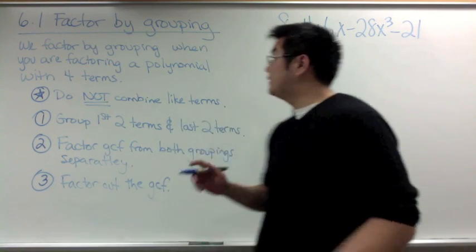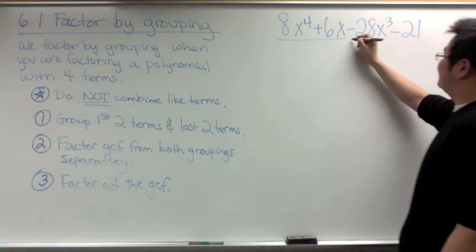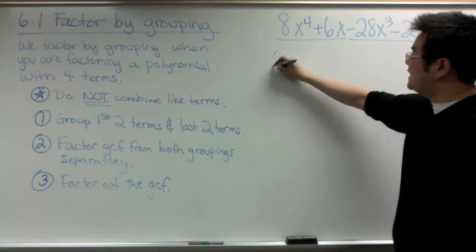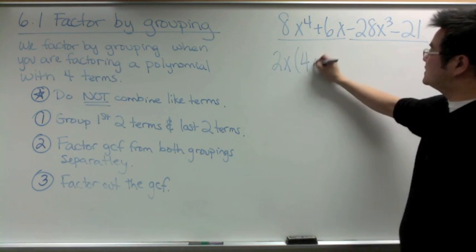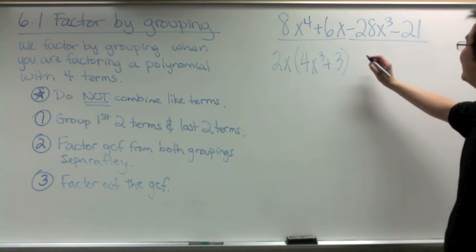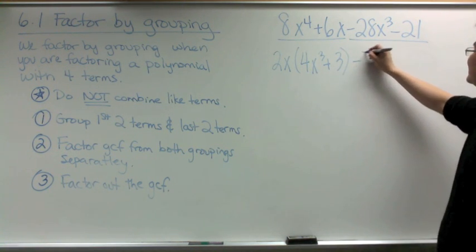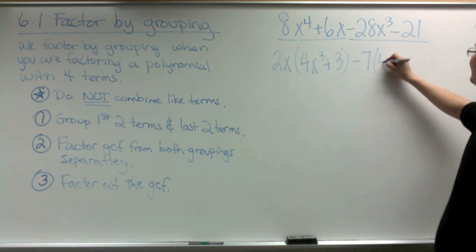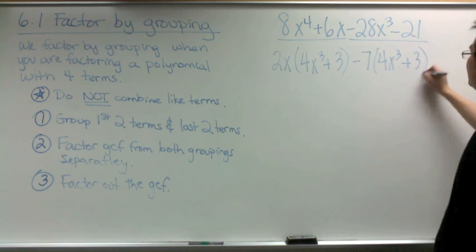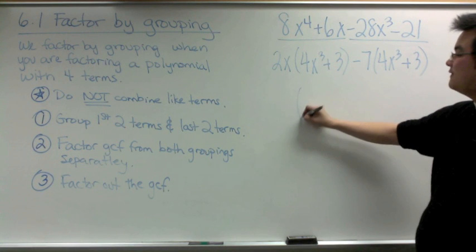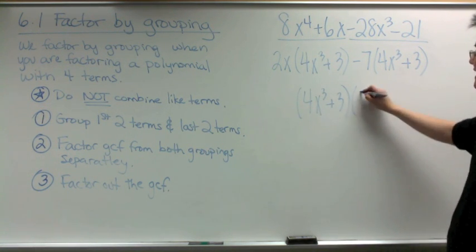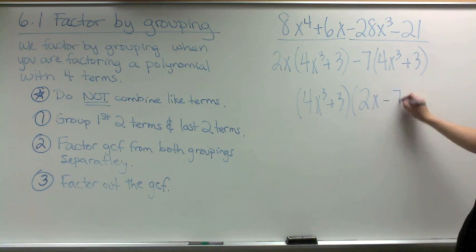In the next example, we group the first two and the last two terms. The GCF for the first two is 2x, leaving 4x³ + 3. Then we factor out −7 from the second grouping, also leaving 4x³ + 3. We factor out the common GCF (4x³ + 3), and what remains is (4x³ + 3)(2x − 7).